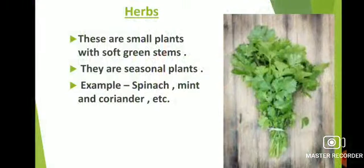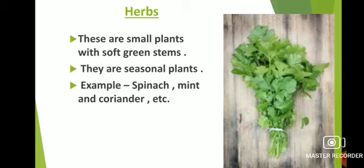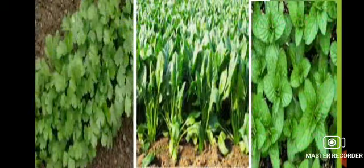The next one is herbs. These are small plants with soft green stems. They are seasonal plants. Examples include spinach, mint and coriander. Herbs are small and have soft green stems. They live only for one season. Spinach, mint and coriander are some examples of herbs. Here in this picture you can see some examples of herbs.